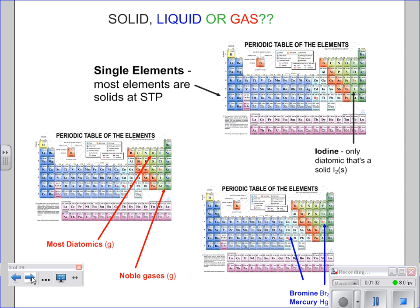If it's just a simple element, we can look at our periodic table. The black ones are going to be solids at room temperature and standard conditions. The red ones are going to be your gases — your noble gases and many of the diatomics — illustrated with a G. Finally, you have just two elements that are liquids at standard conditions: bromine and mercury.